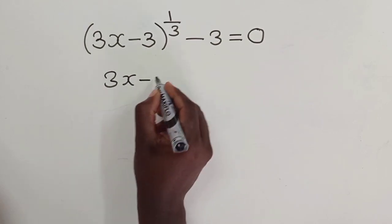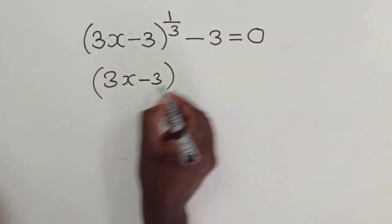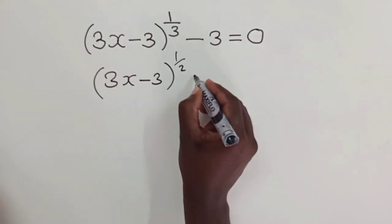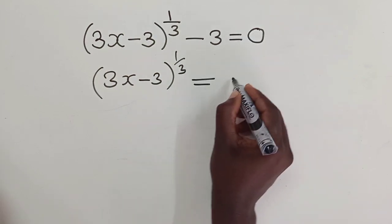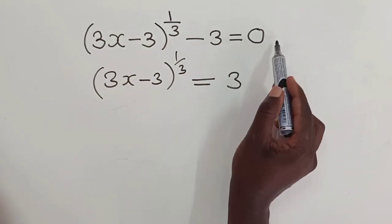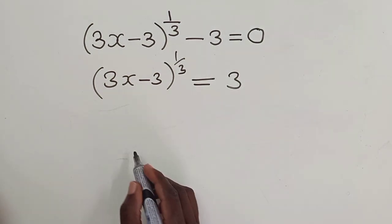We first add, not really subtract, you add 3 to both sides. So you have a 3 this side. This 3 will come this side, it will be positive 3.